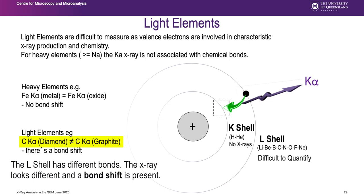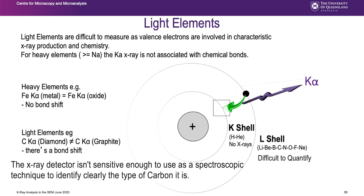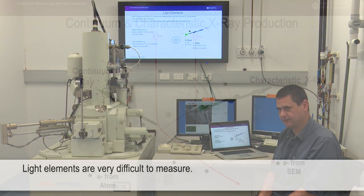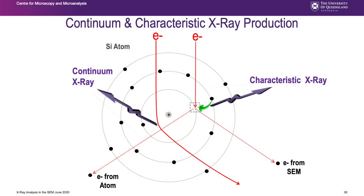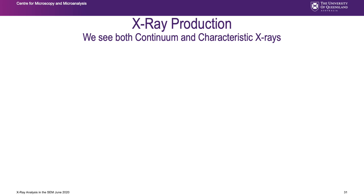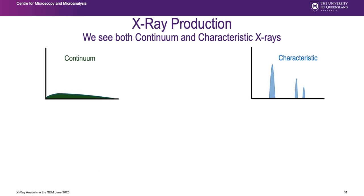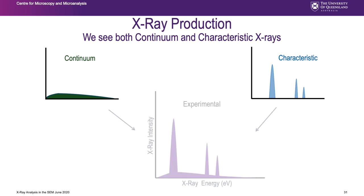This bond shift is difficult to measure - my X-ray detector is not sensitive enough to use it clearly as a spectroscopic technique, yet it's enough to make the measurement difficult without being useful. So light elements are very hard to measure. When the primary beam hits your specimen, both effects happen simultaneously: characteristic X-rays and continuum X-rays are produced together. That combined result is what we actually see with our detector in experimental data.